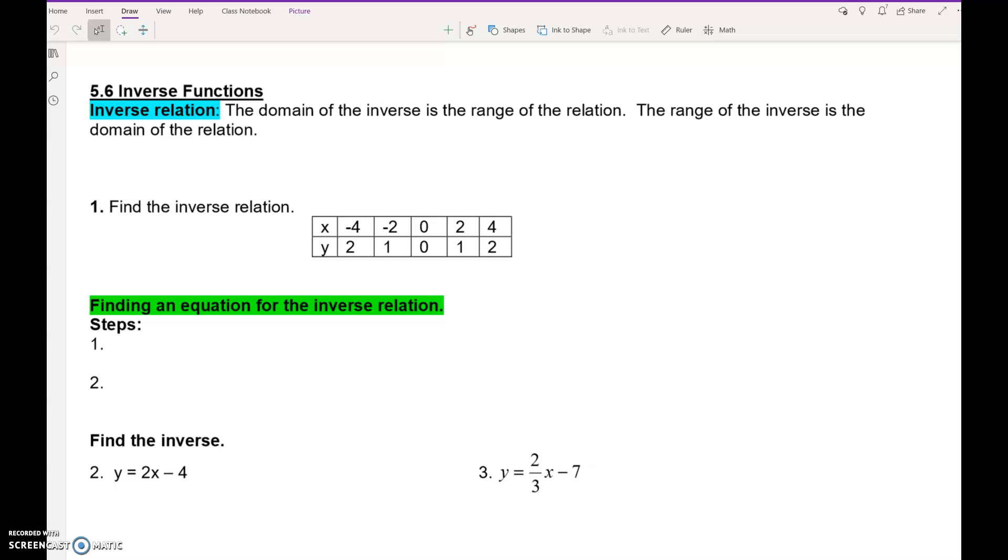So here's an inverse relation. Our x values are -4, -2, 0, 2, and 4. The y values are 2, 1, 0, 1, 2. If we find the inverse relation, we're going to write an xy table. The x's become the y's, so our y's in the inverse will be -4, -2, 0, 2, 4. And the y's become the x's: 2, 1, 0, 1, 2.